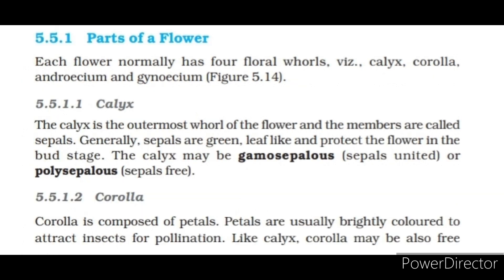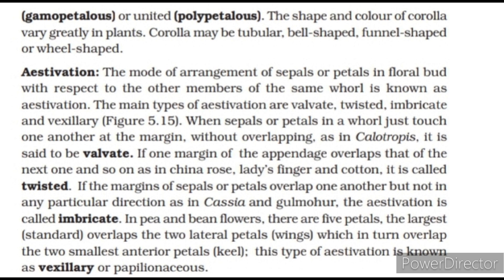Parts of a flower. Each flower normally has four floral whorls: calyx, corolla, androecium and gynoecium. Calyx is the outermost whorl of the flower and the members are called sepals. Generally, sepals are green, leaf-like and protect the flower in the bud stage. The calyx may be gamosepalous (sepals united) or polysepalous (sepals free). Corolla is composed of petals. Petals are usually brightly colored to attract insects for pollination. Like calyx, corolla may also be gamopetalous (free) or polypetalous (united). The shape and color of corolla vary greatly in plants. Corolla may be tubular, bell-shaped, funnel-shaped or wheel-shaped.